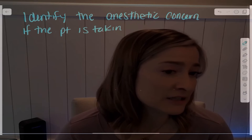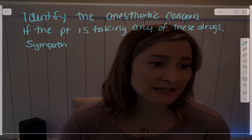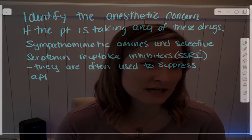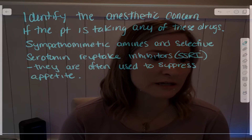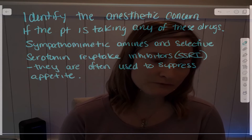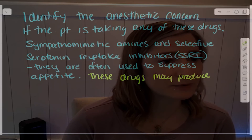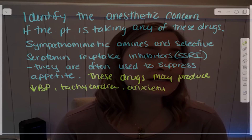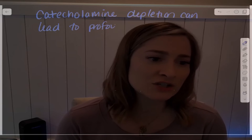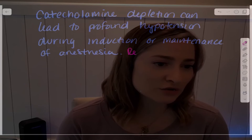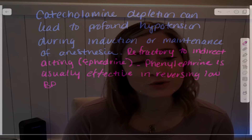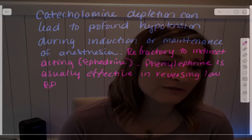If you have an obese patient taking a sympathomimetic amine and a selective serotonin reuptake inhibitor (SSRI) — these drugs can be used to suppress appetite and bariatric patients are sometimes on them. These drugs may produce hypotension, tachycardia, anxiety, psychosis, and catecholamine depletion. Catecholamine depletion can lead to profound hypotension during induction or maintenance of anesthesia, which is refractory to indirect-acting vasopressors such as ephedrine. In this situation, you want to use phenylephrine, which is direct-acting, as it's usually effective in reversing low blood pressure.